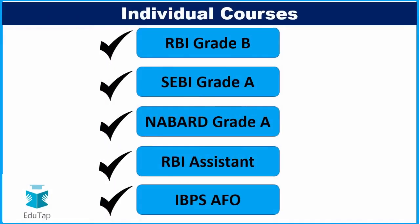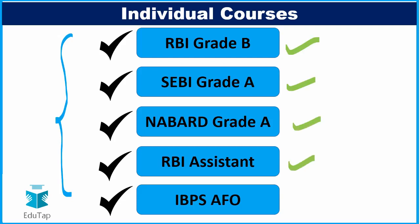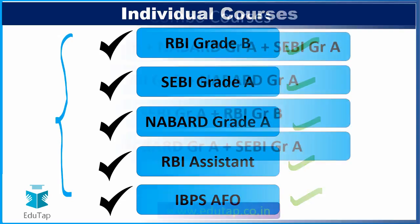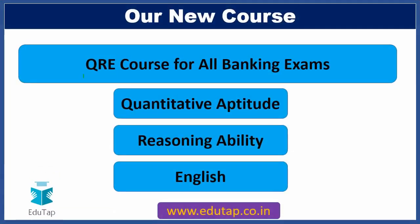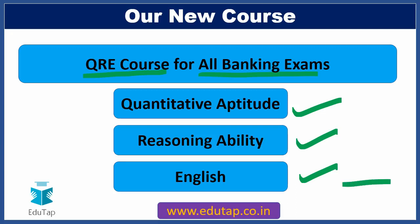For knowing more about the courses being offered by EduTap, you can take a quick snapshot of these slides. We offer individual courses including RBI Grade B, SEBI Grade A, NABARD Grade A, RBI Assistant, and IBPS Agriculture Field Officer. We also offer combo courses: RBI-NABARD-SEBI, RBI-NABARD, and SEBI. We are glad to announce the launch of our new QRE course for all banking examinations, specially covering quantitative aptitude, reasoning ability, and English. Wrapping up with the introduction and moving on to the first MCQ.